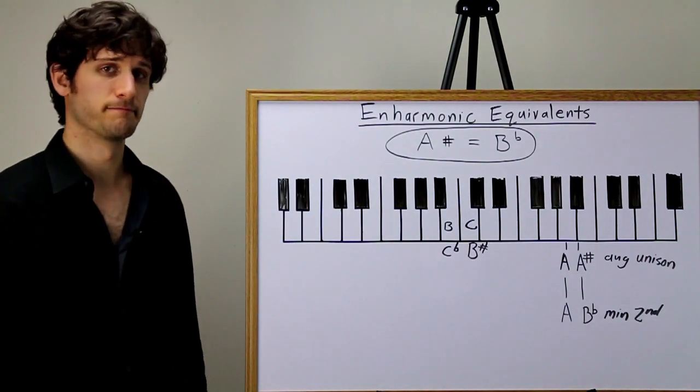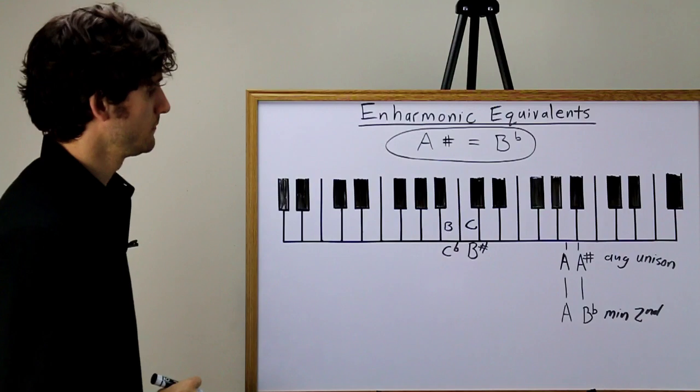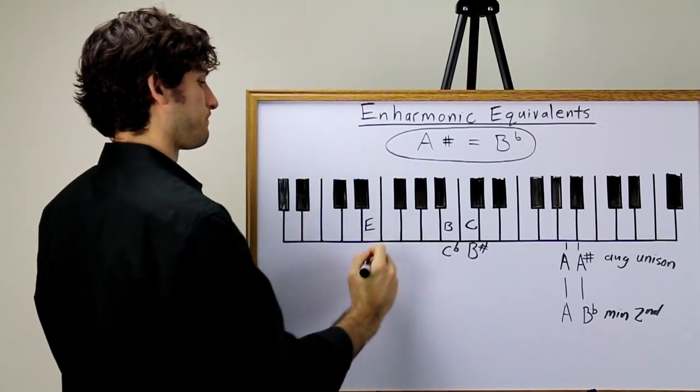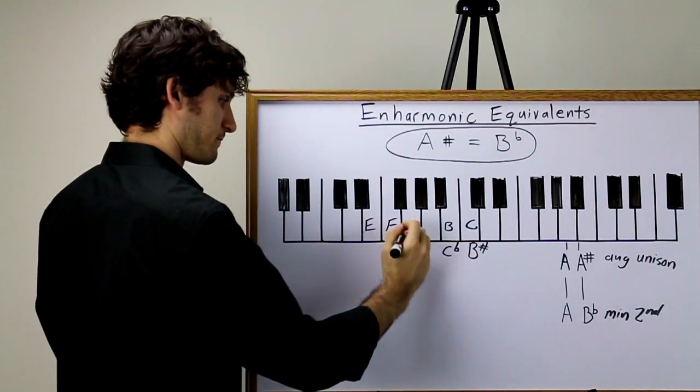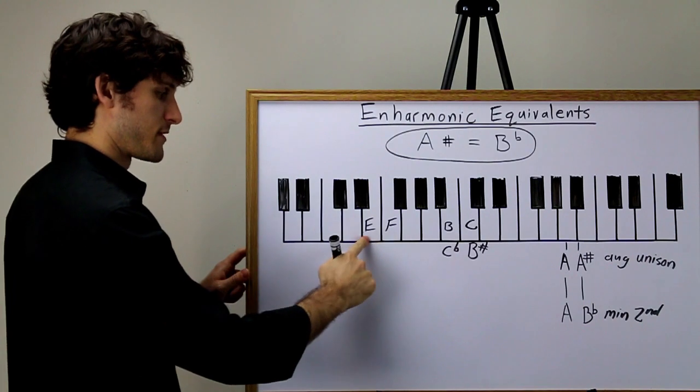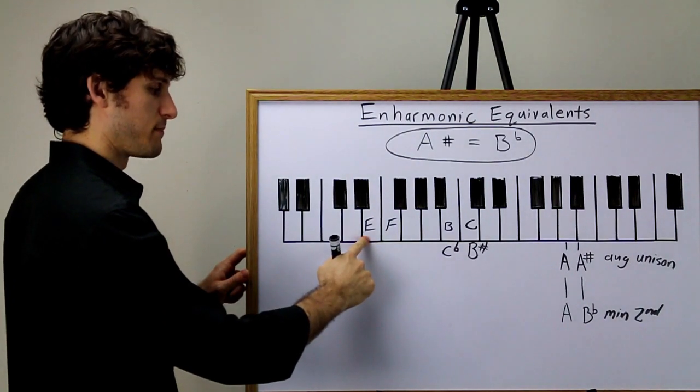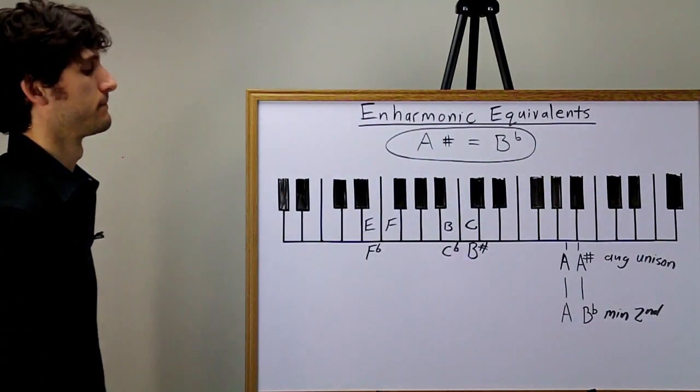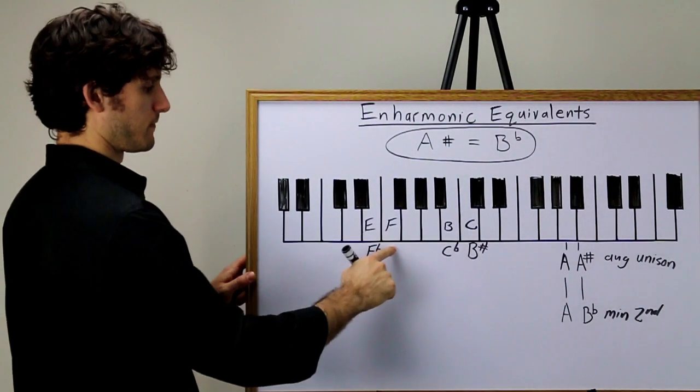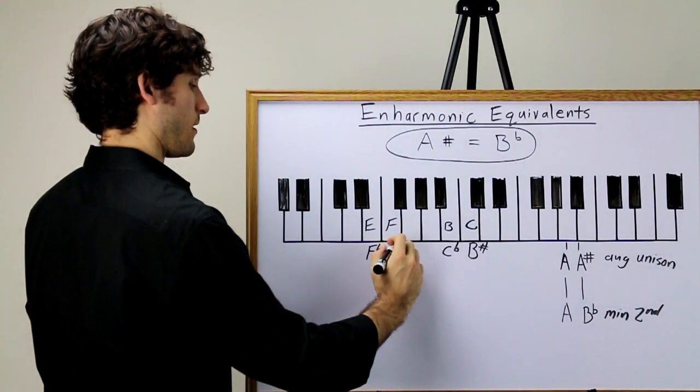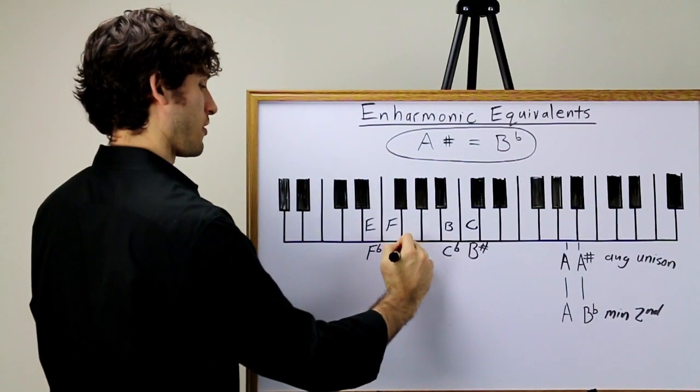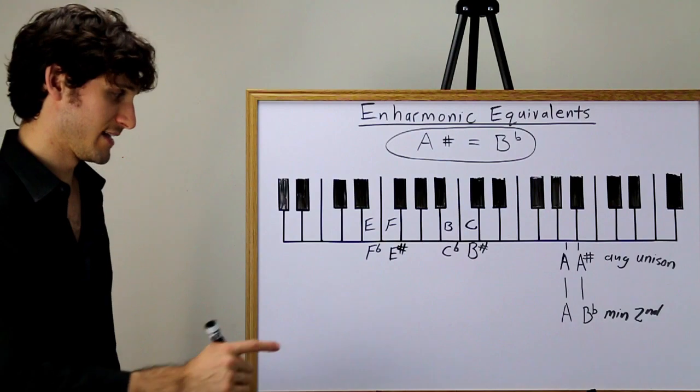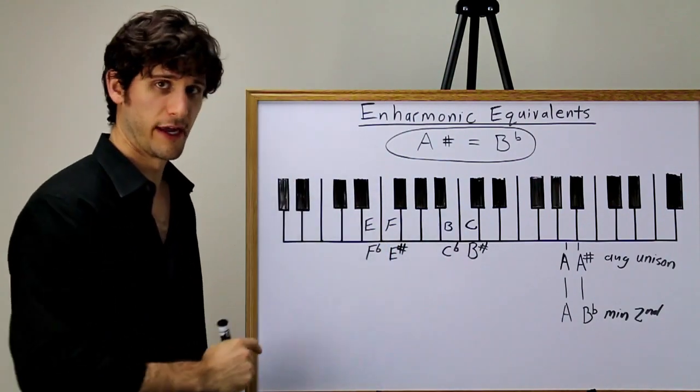I really do apologize if this makes your head spin. It's just kind of the way it is. Let's look at one more. This note is E. And this note is F. But this note is one half-step below F, so it is also F-flat. And this note is one half-step above E, so it is also E-sharp. F-flat and E are enharmonic equivalents. And E-sharp and F are enharmonic equivalents.